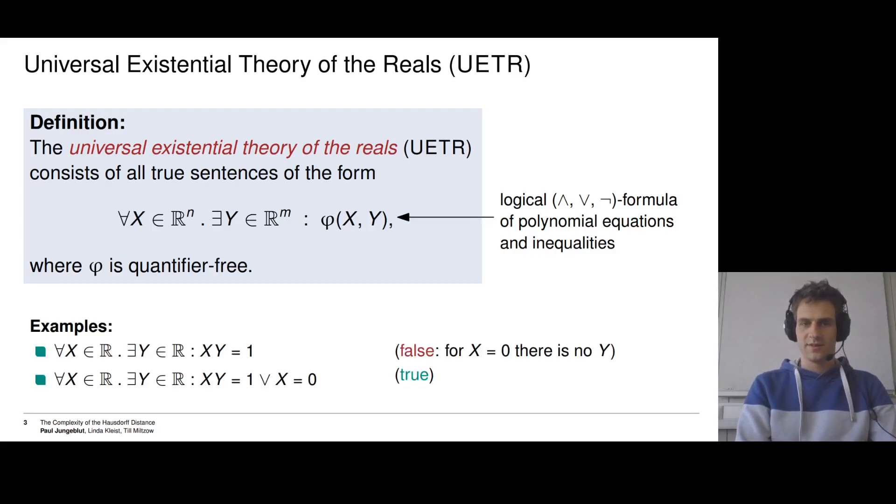So let's consider two examples. We can look at the first example: for all real numbers x, there is a real number y such that x·y = 1. This is false, because for x = 0 there is no such y. For all other x, there is a y, but having one counterexample is enough to make the formula false.